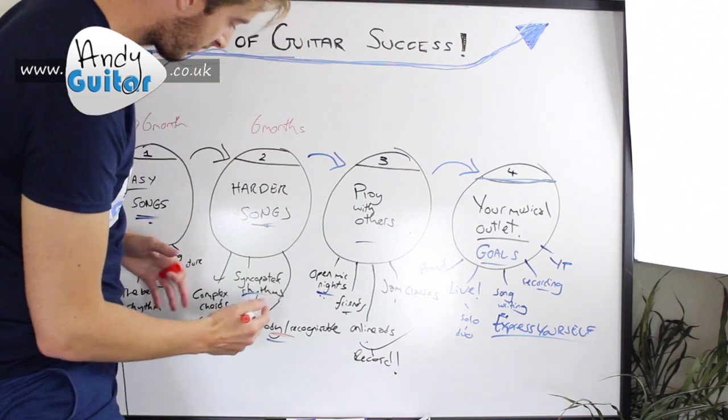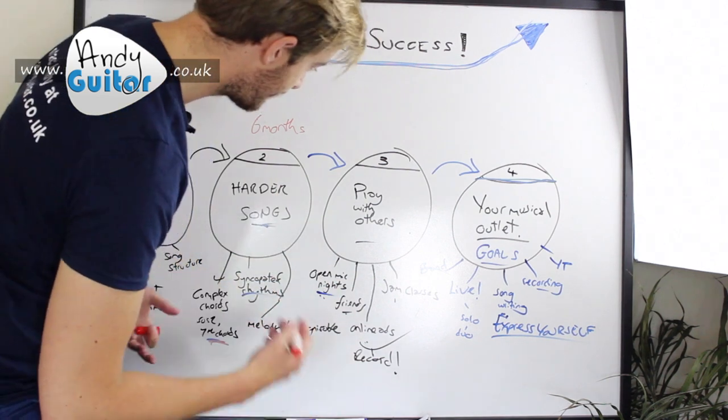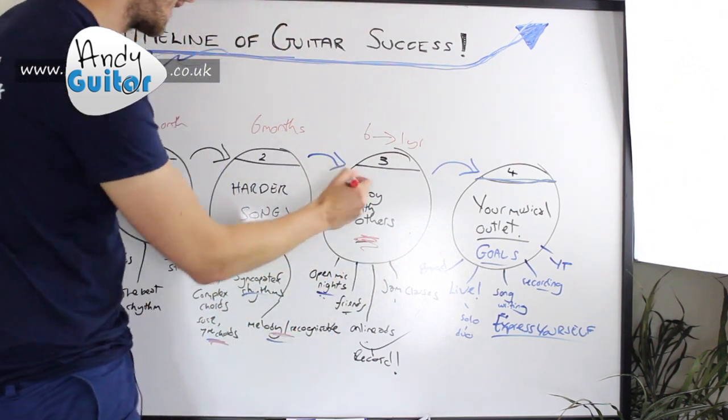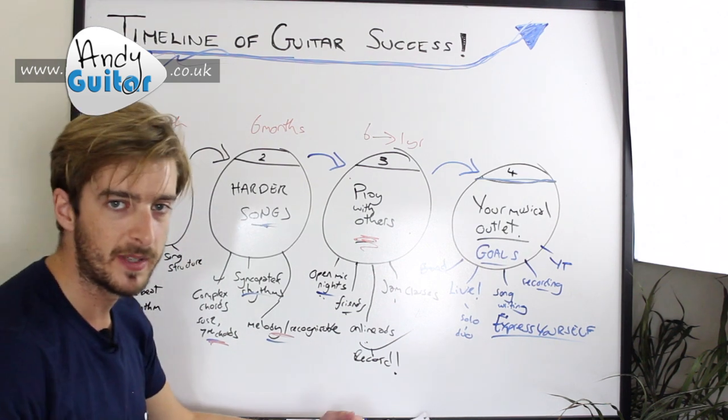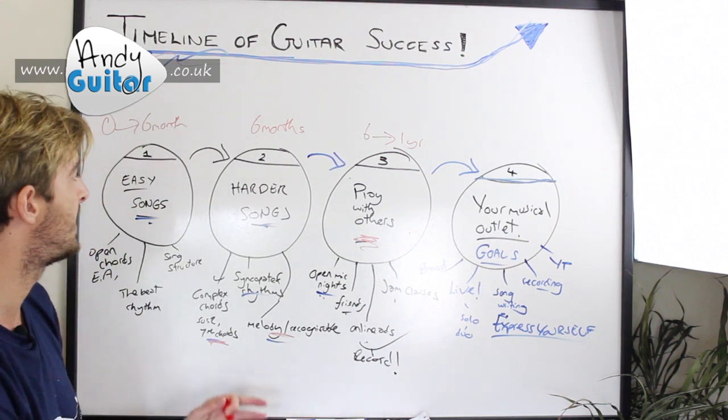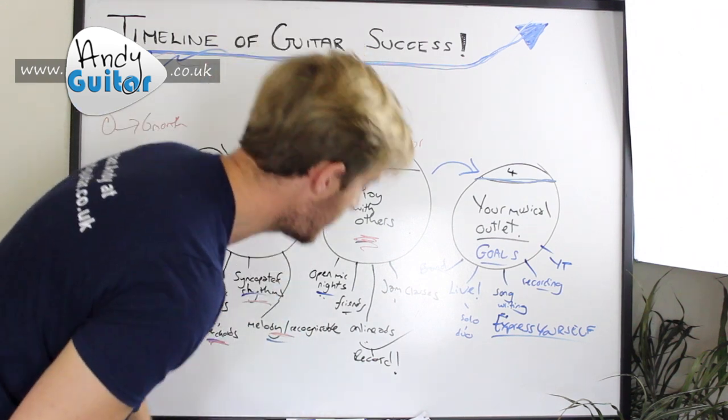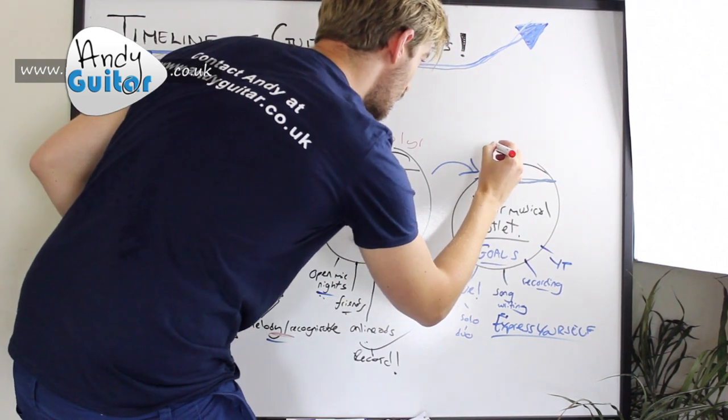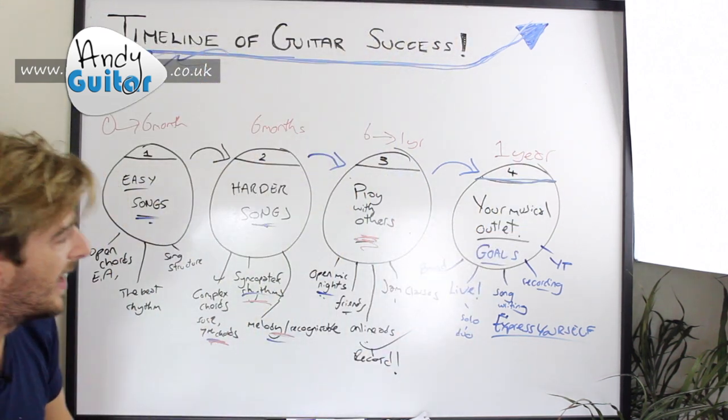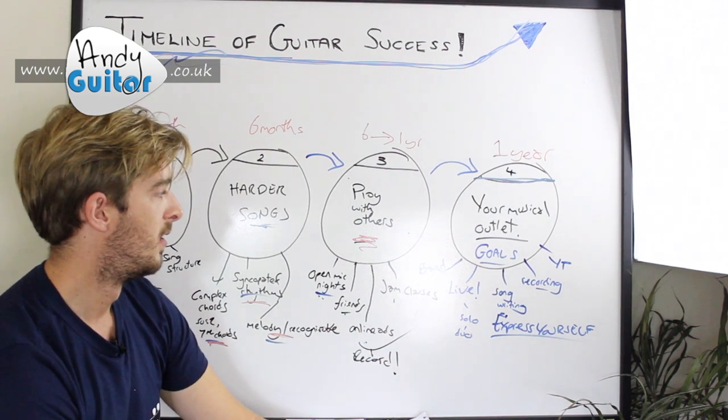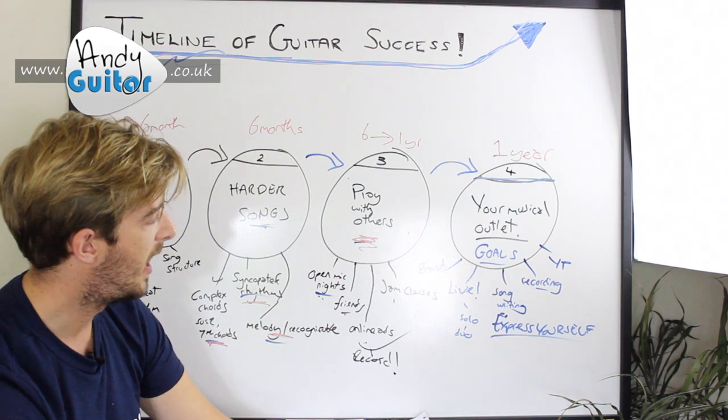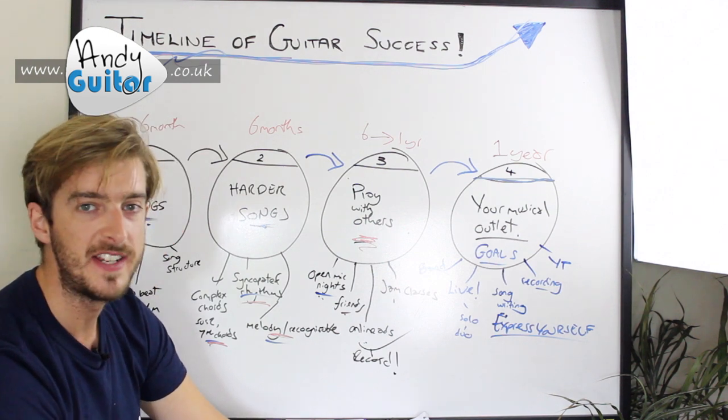After six months, and once two, three or four harder songs have been kind of you're there with, between six months to one year is when you want to be looking at play with others. You can play with others from the start. I'm not saying beginners courses that have, or beginners lessons that have more than one person are a bad thing. They're just not for everyone. I've found it better to wait until certain things have been mastered. And then certainly, if you're not aware what your musical outlet is, at least one of these things should be very much a big part of your practice routine and your thoughts for where you're wanting to go.